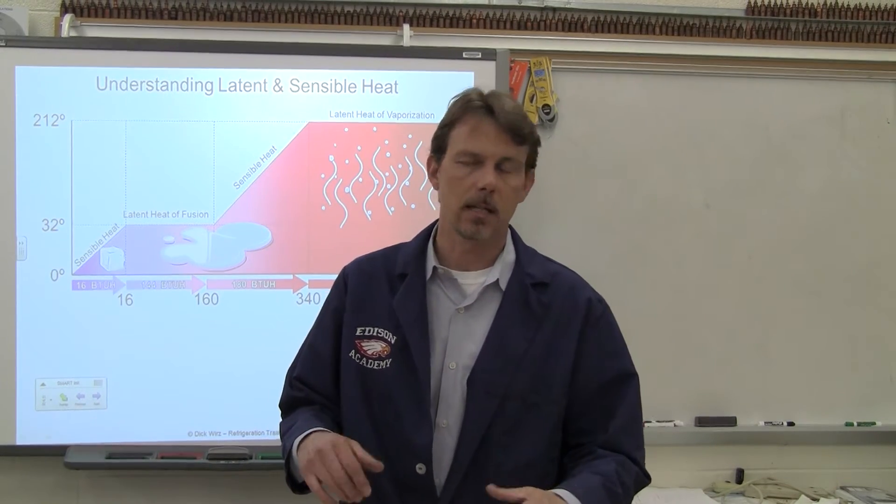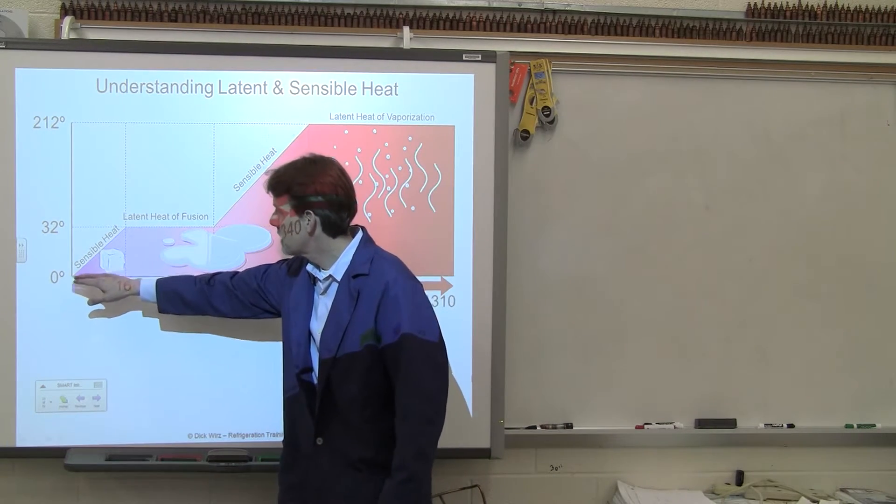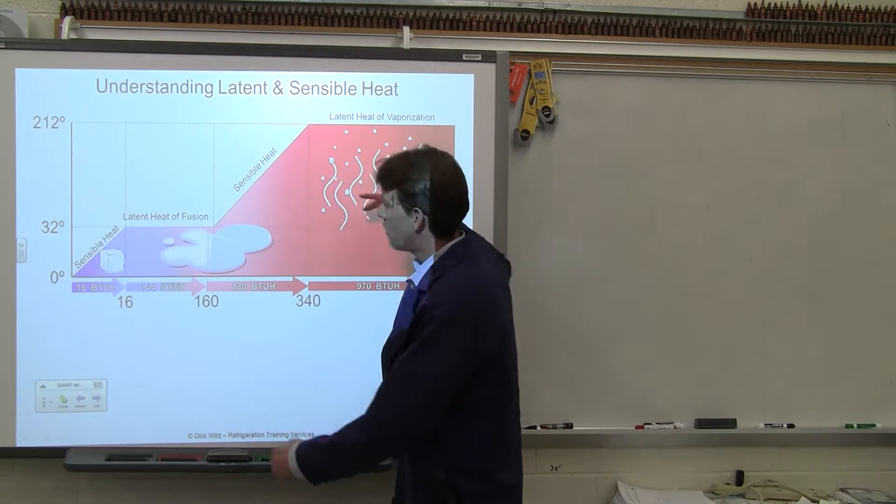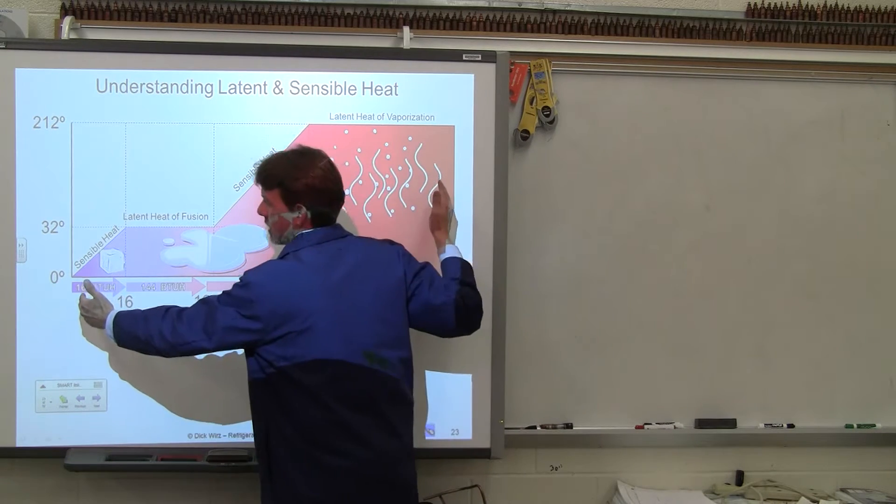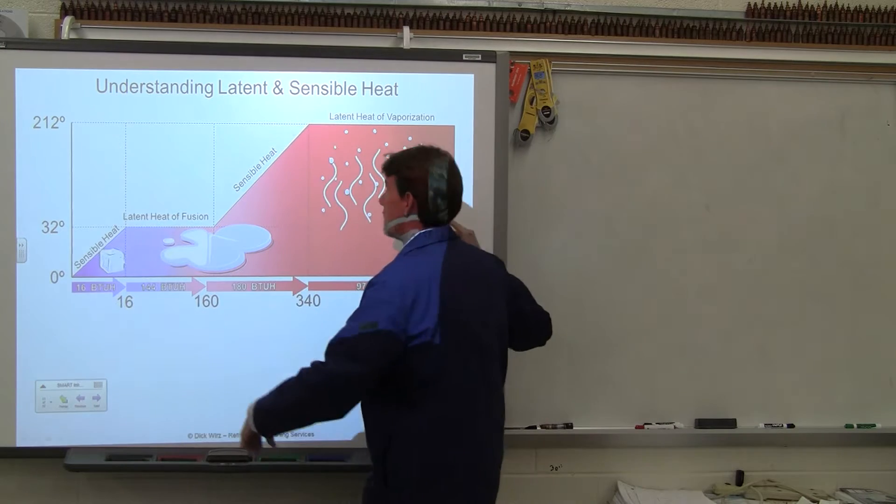Okay, so we get questions on where does the tonnage come from in heating and air conditioning. I've talked to the students about this a few times. They've already drawn this latent sensible heat graph. This whole graph here is what we call the enthalpy of water from zero degrees Fahrenheit, one pound of it, all the way up to 212 degrees steam.